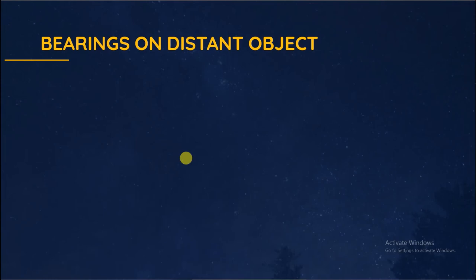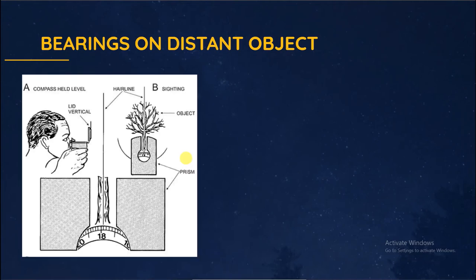Taking bearings on distant object. This procedure gives a magnetic bearing which may need to be converted to a true bearing before using it for other purpose. The correct way to hold the compass for taking bearings is with your thumb. Hold it through the large metal ring at the base of the compass.